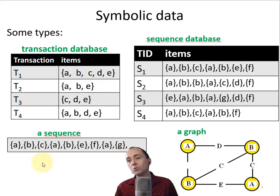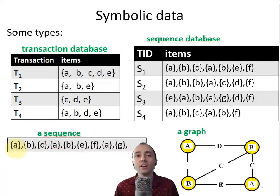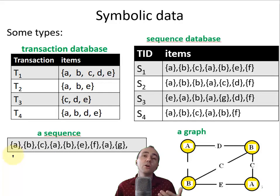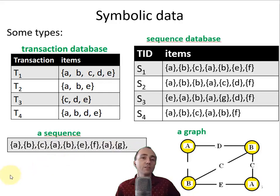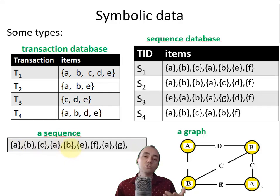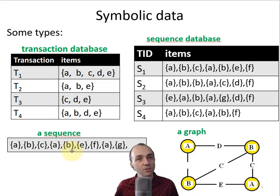Another type of data is what we call a sequence — data where we have time ordering, like A followed by B, followed by C, followed by A, followed by B, E, and so on. This could be events in a computer network: event A, then event B, then C, then A again. What we can find in such data is that A followed by B appears many times. So if there is some event A in the computer network, then it is always followed by B. That is something we want to find — to understand the data.